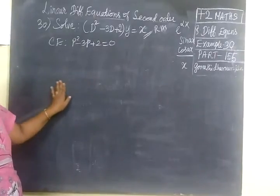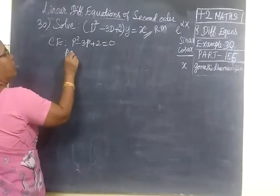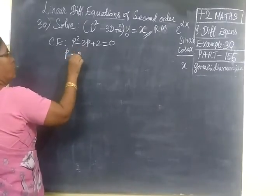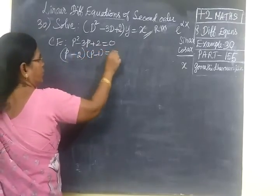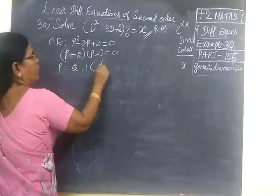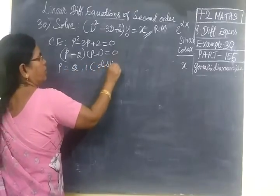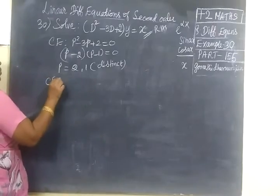Once you understand, the sum will be easy. So here you write P minus 2, then P minus 1 equal to 0. So P equal to 2, 1. These are the roots. If the roots are distinct we know complementary function